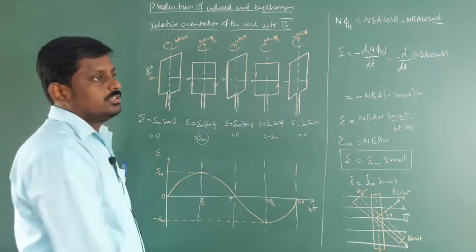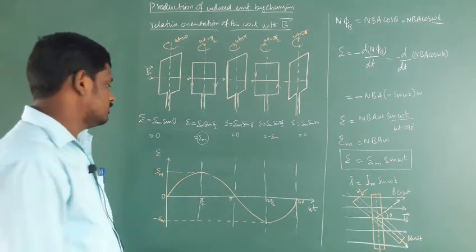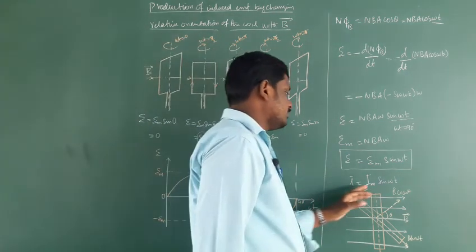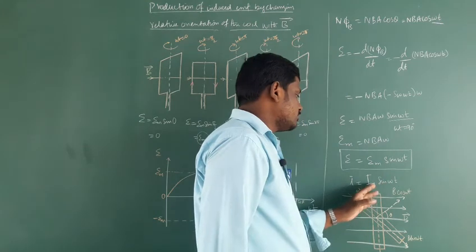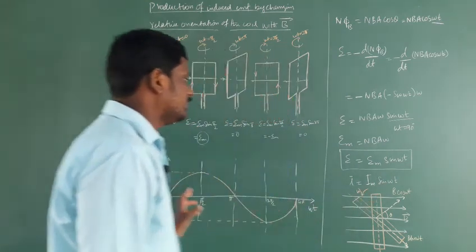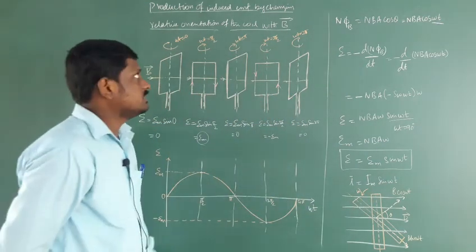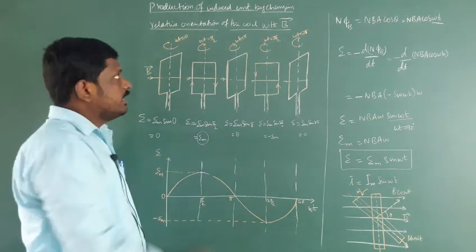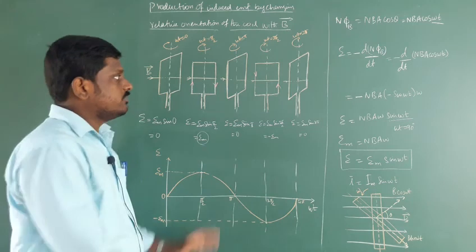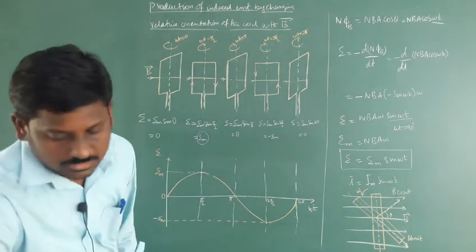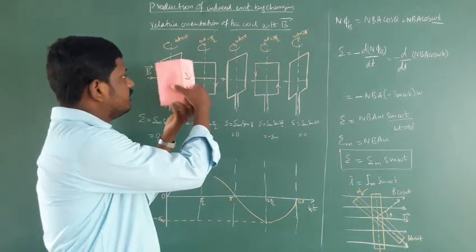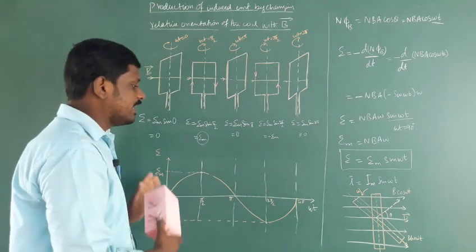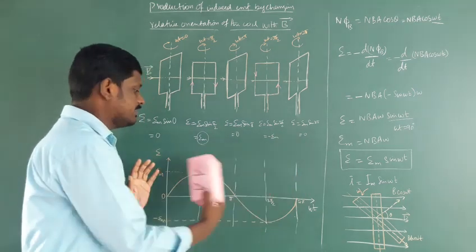This alternating voltage flows in a circuit, producing alternating current. The alternating current i = I_m sin ωt, where I_m is the maximum current flowing in the circuit. In this class we discussed how induced EMF is produced by changing the orientation of the rectangular coil of N turns with respect to the magnetic field, and how the induced EMF varies as a sinusoidal wave.